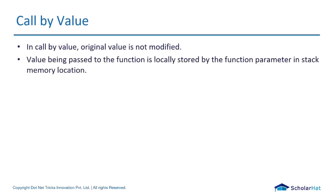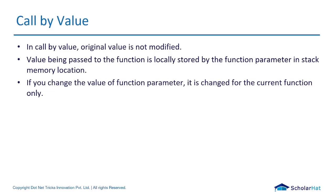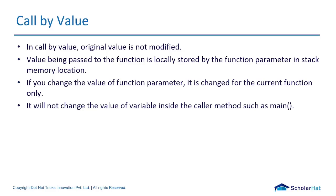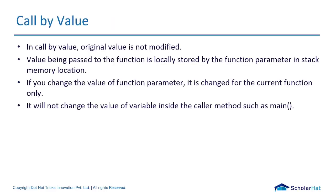In call by value, the original value is not modified. Separate memory blocks are created when you do call by value. Call by value means we're simply going to pass the argument and it is going to be passed to the function. The value being passed to the function is locally stored by the function parameter in stack memory location. If you change the value of the function parameter, it is changed for the current function only. It will not change the value of the variable inside the caller method such as the main function. So the original value will not get modified.